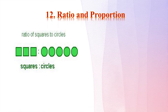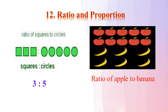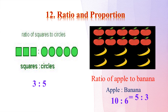Now look at this picture — ratio of squares to circles. There are three squares and five circles, so square to circle is 3 is to 5. Now look at this picture — there are ten apples and six bananas. So the ratio of apples to bananas is 10 is to 6.